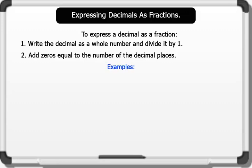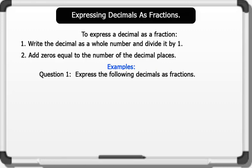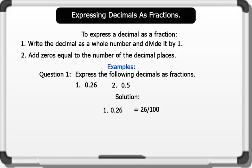Let's see some examples. Express the following decimals as fractions: 1. 0.26  2. 0.5. Solution: 1. 0.26 as a fraction — write 26 as a whole number divided by 1, then add two zeros. This gives 26 over 100, which simplifies to the lowest fraction: 13 over 50. 2. 0.5 as a fraction — write 5 as a whole number divided by 1, then add one zero. This gives 5 over 10, which simplifies to 1 over 2.